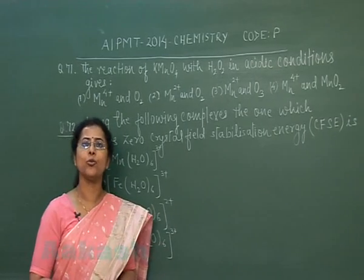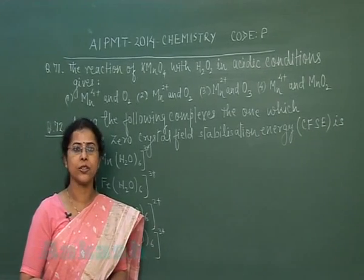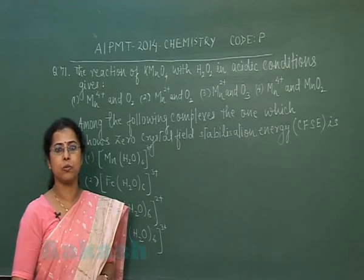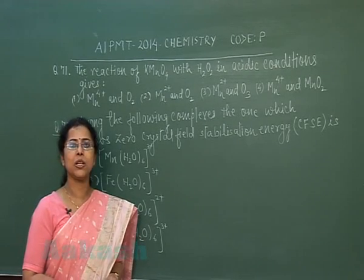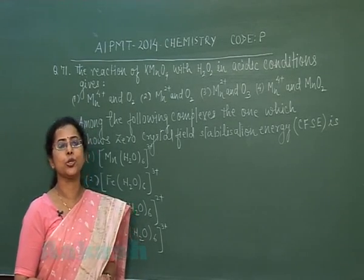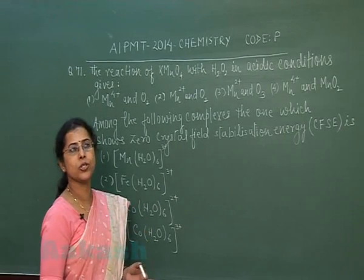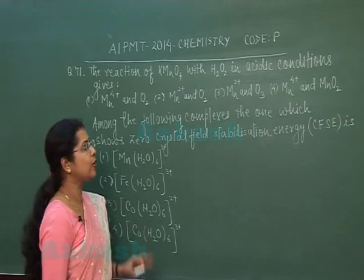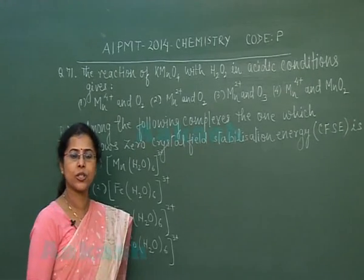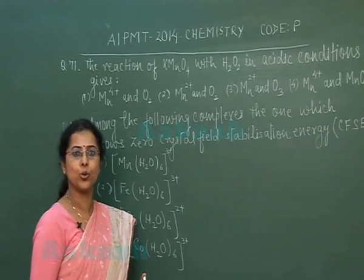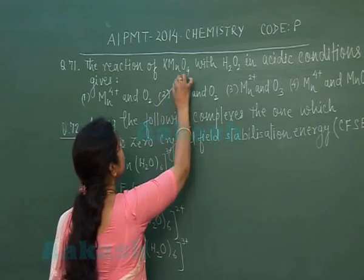As you know, KMnO4 is a powerful oxidizing agent in acidic medium. In acidic medium itself, it reduces to Mn2+. It means hydrogen peroxide will oxidize, and when hydrogen peroxide oxidizes, the product is O2. So the correct option is the second one.